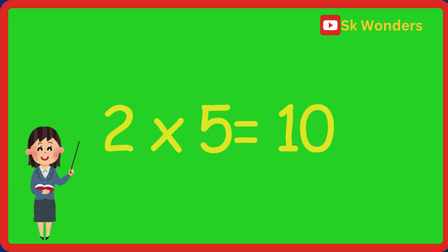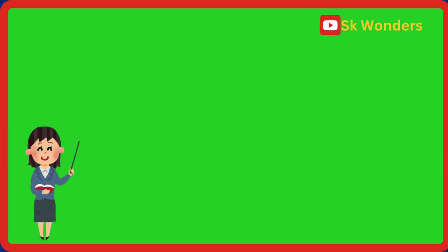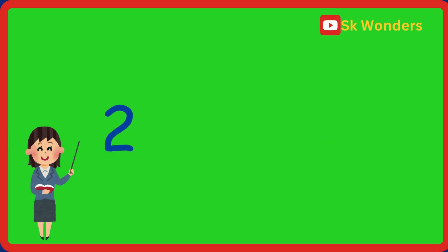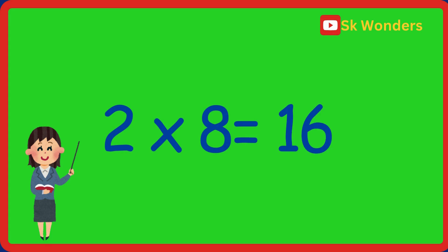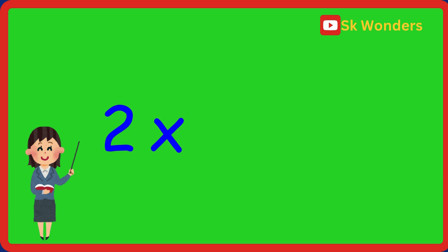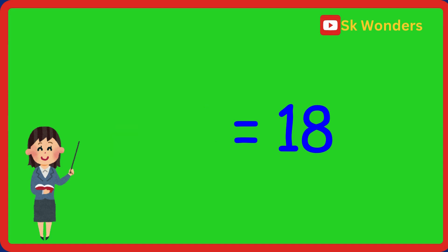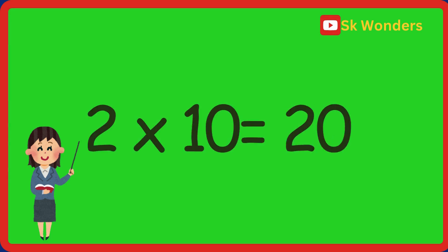Two times five is ten. Two times five is ten. Two times six is twelve. Two times six is twelve. Two times seven is fourteen. Two times seven is fourteen. Two times eight is sixteen. Two times eight is sixteen. Two times nine is eighteen. Two times nine is eighteen. Two times ten is twenty. Two times ten is twenty.